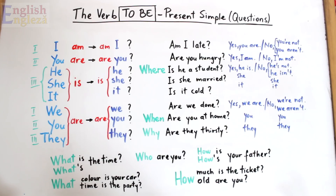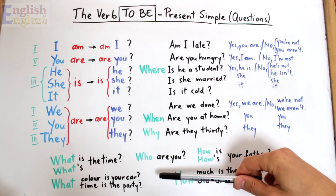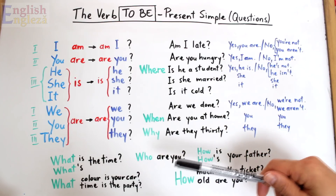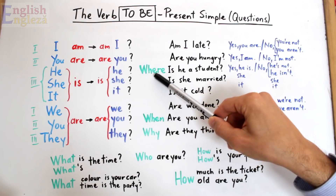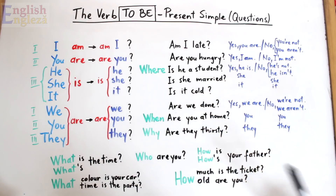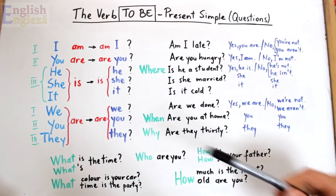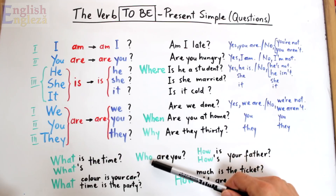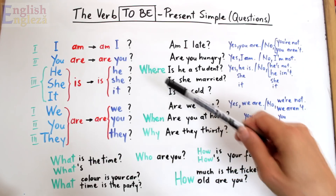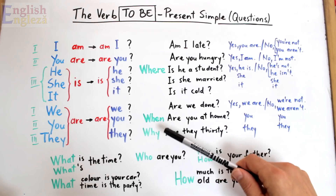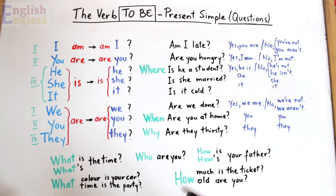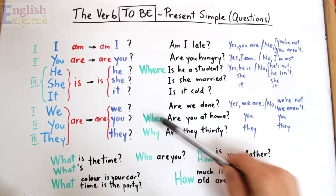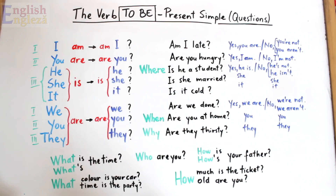Pentru a formula întrebări deschise, așa numitele open questions, care necesită răspunsuri mai elaborate, cu mai multă informație, folosim așa numitele întrebări WH, WH questions. Numite așa deoarece încep cu acest grup de litere, wh. Cele mai utilizate astfel de întrebări în engleză sunt: what — ce, who — cine, where — unde, when — când, why — de ce, și how — care înseamnă cum. Chiar dacă how nu începe cu wh, face parte din grupa acestor WH questions.